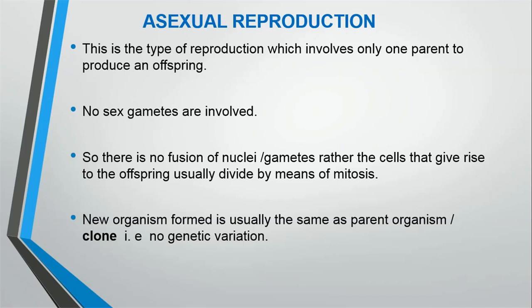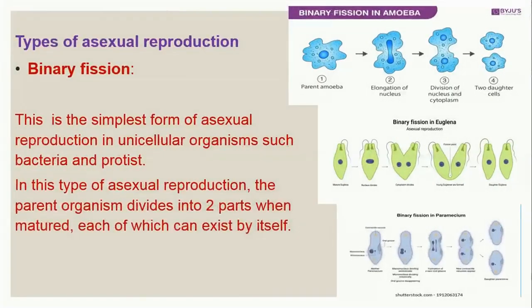The new organism formed is usually the same as the parent organism — meaning the offspring is an exact copy of the parent. You can say the new organism is a clone of the parent organism. This is because there is no genetic variation between them. Now let's look at the types of asexual reproduction.